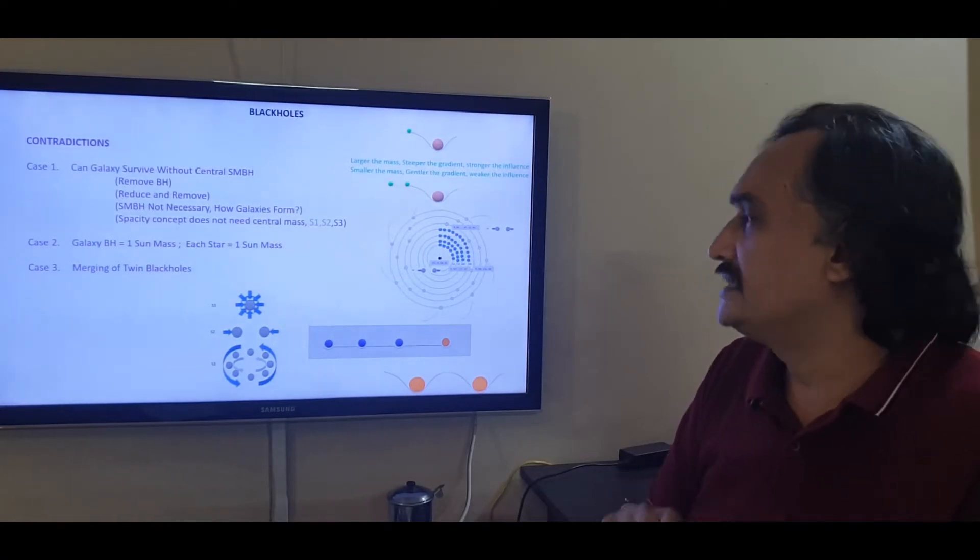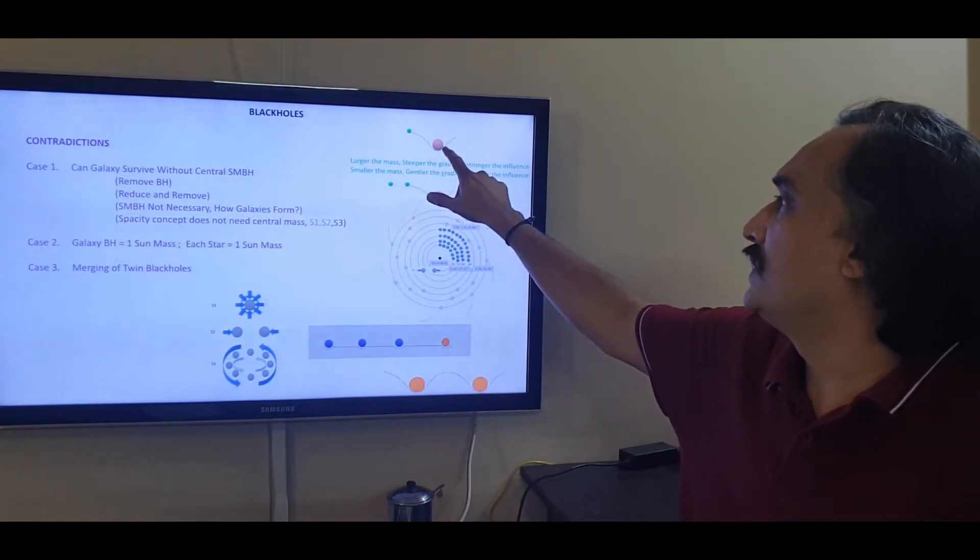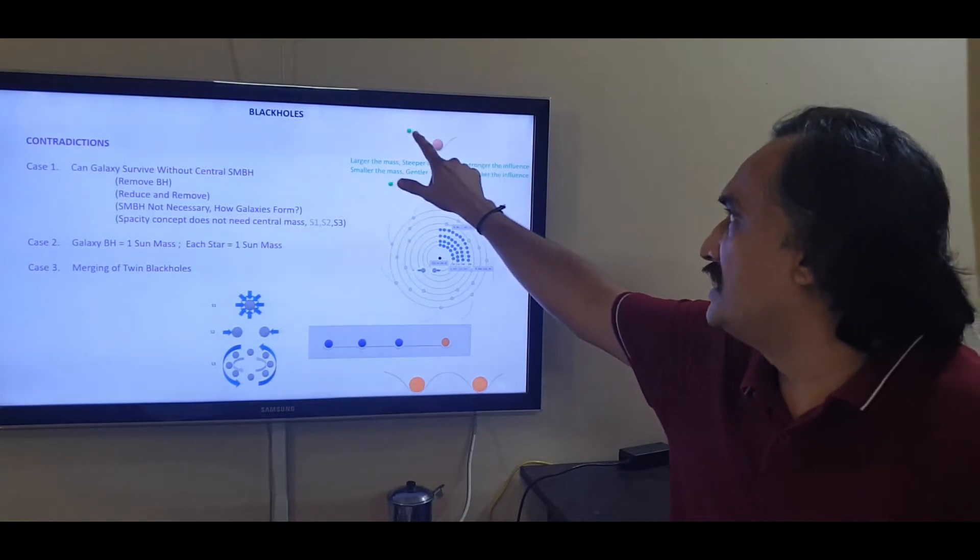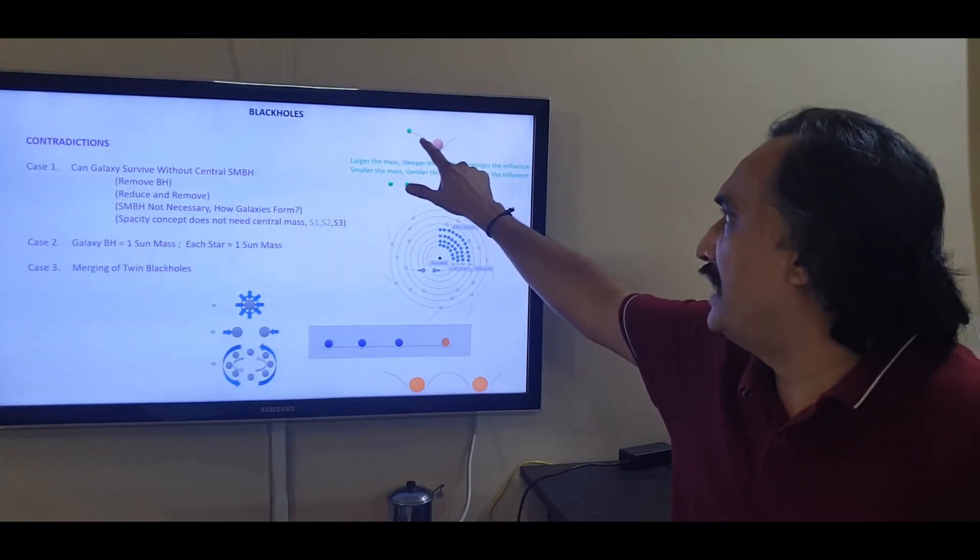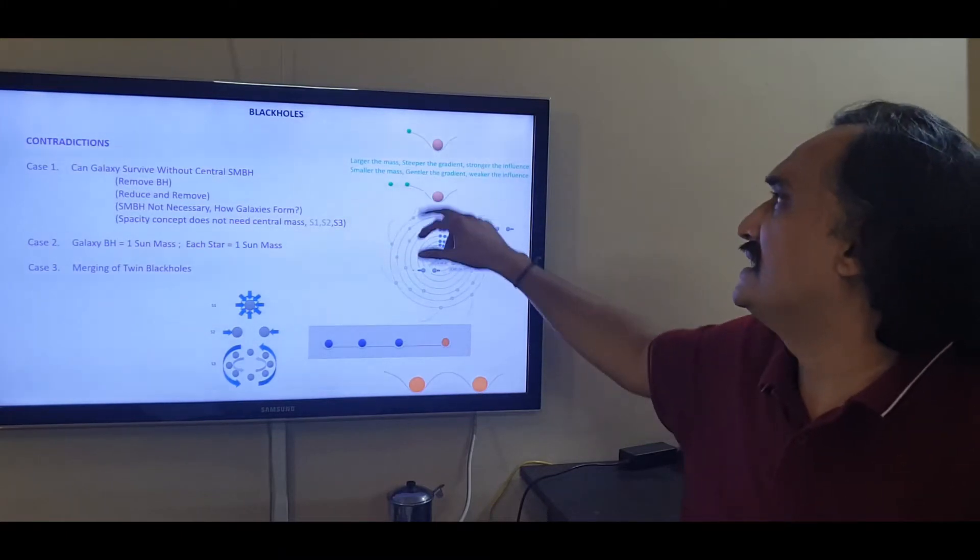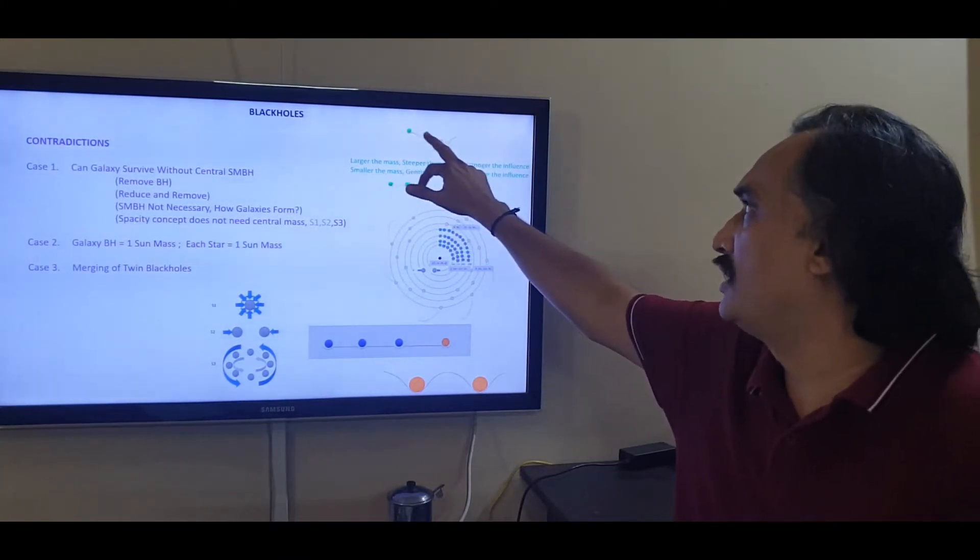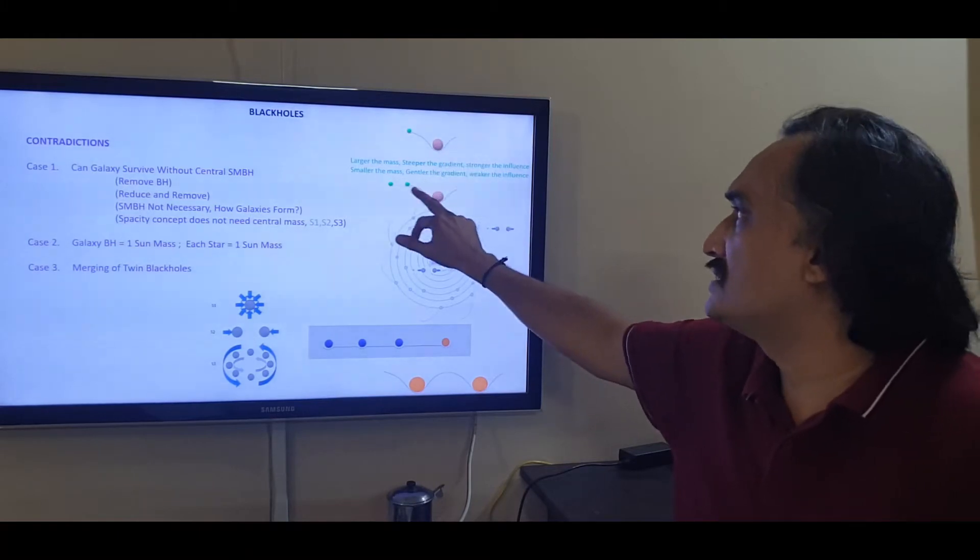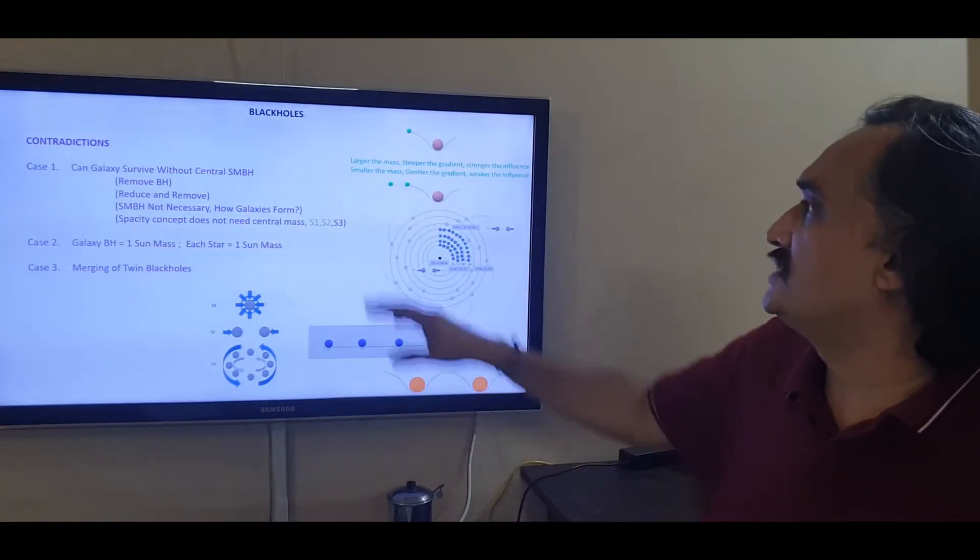So what it is saying is that when you have a larger mass, it is bending the space, and the bent space is telling this particular mass how to move around it. In the sense, if this is a bigger mass, then this would be closer to it. If it is a smaller mass, it would move away from it.